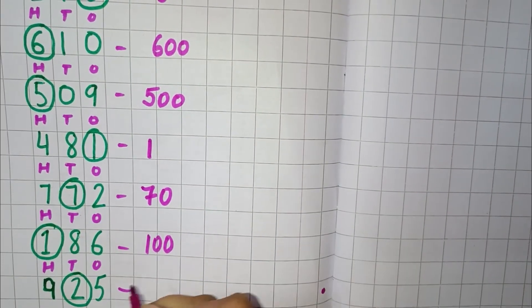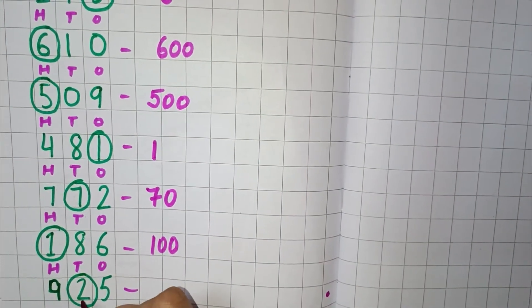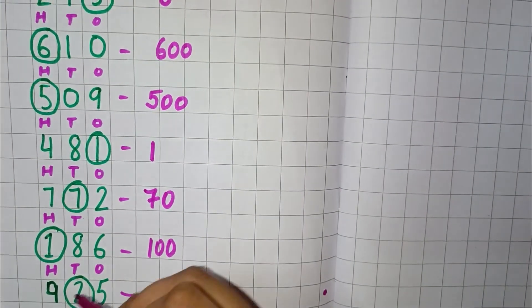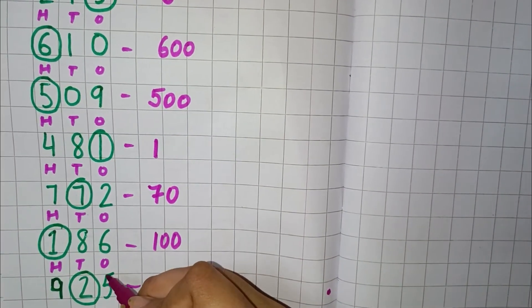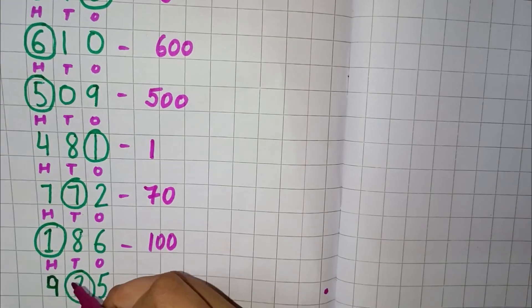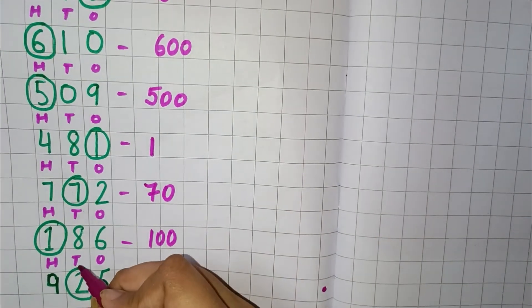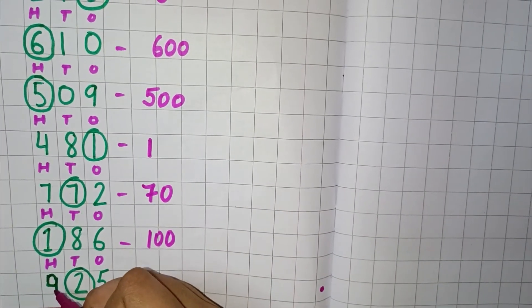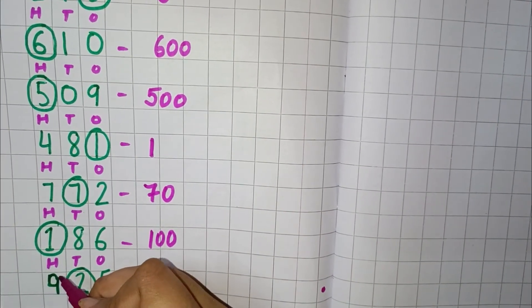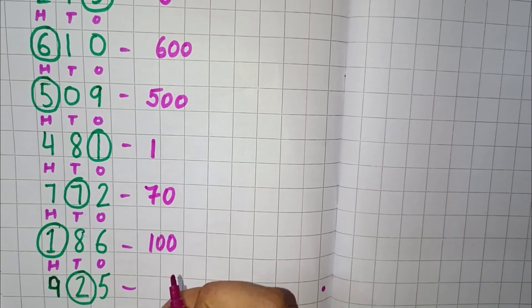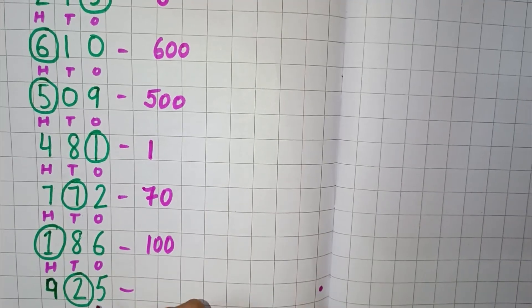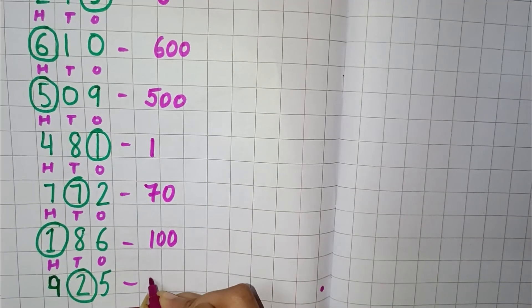Next is 925. Here 5 is in the 1's place, 2 is in the 10's place, and 9 is in the 100's place. So we will write here 20.